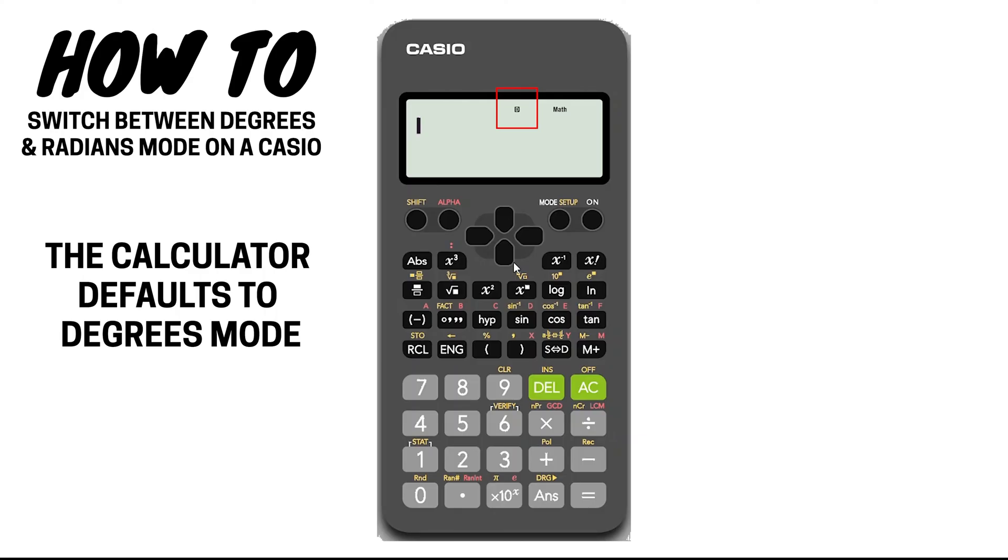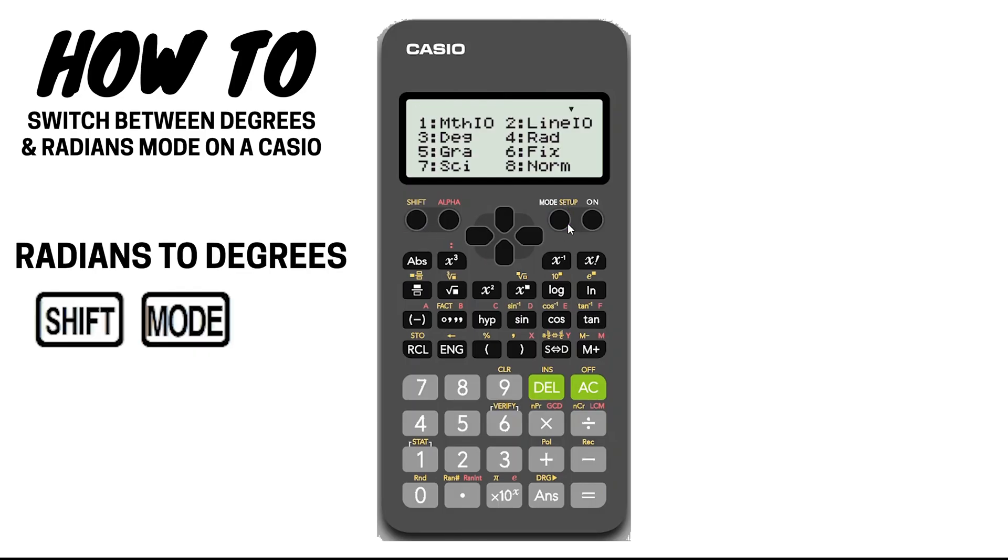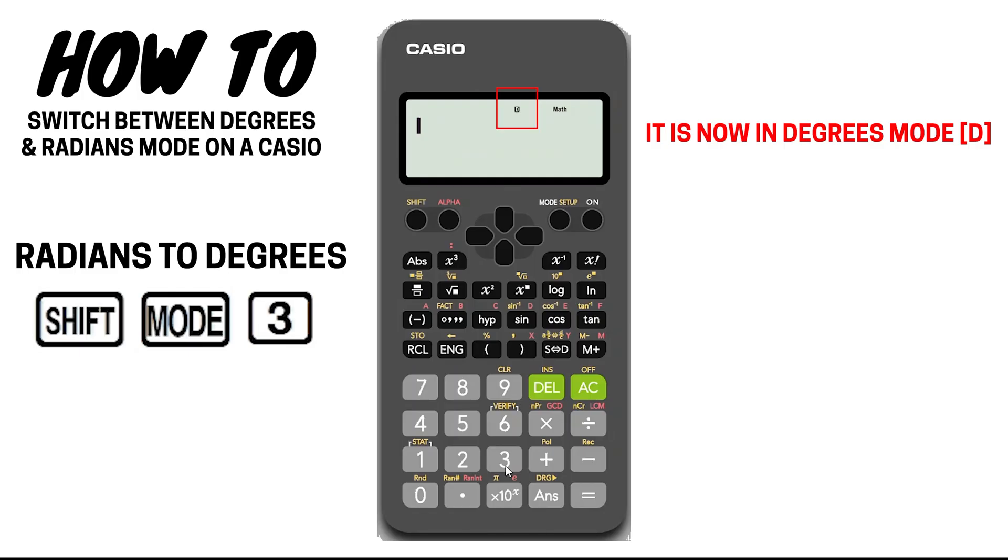If you do need to put your calculator into radians mode, press shift, mode, four. You should now see a little R at the top of your screen. To switch back to degrees mode, press shift, mode, three, or reset your calculator, as degrees is the default setting.